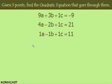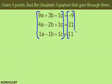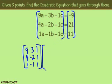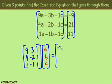To solve the system of three equations with three unknowns, I'm going to use matrices. I'll create a coefficient matrix times an unknown matrix equal to a constants matrix. The coefficient matrix has entries 9, 3, 1 / 4, -2, 1 / 1, -1, 1. The unknown matrix is [a, b, c], and the constants matrix is [-9, 21, 11]. We just need to solve this matrix equation to find a, b, and c.